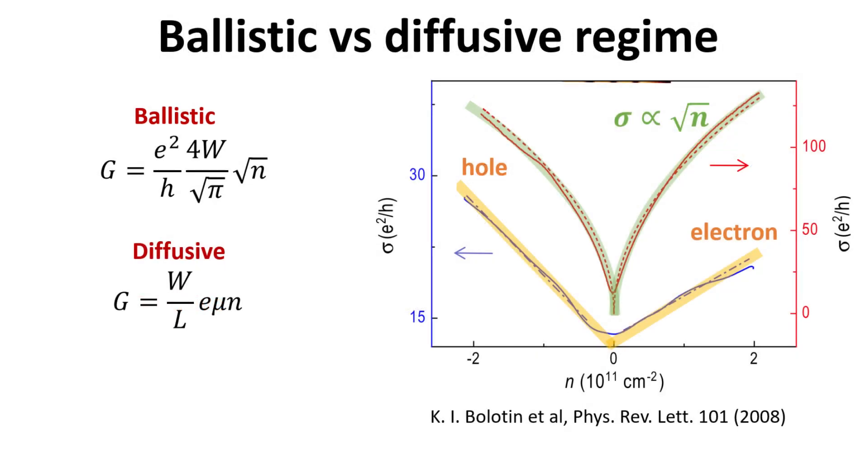In summary, we see that the ballistic and diffusive conductance have distinctively different dependence on the carrier density. In addition, the ballistic conductance does not depend on length L, contrary to the inverse L dependence for the diffusive case.